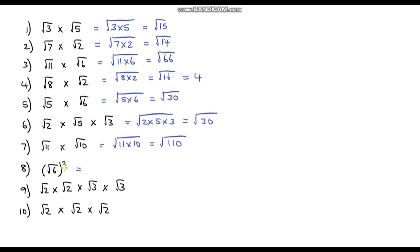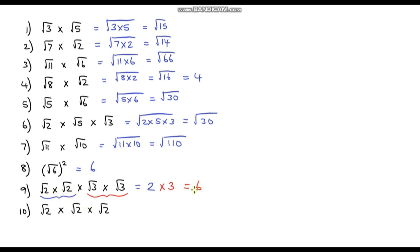The next one: the square root of 6 squared. Well that's the square root of 6 multiplied by the square root of 6, and the answer is just going to be 6. I don't need to do any calculations because I'm taking the square root of something and then squaring it — we're just undoing the operation, so we're back to where we started. For the following one: we've got the square root of 2 times the square root of 2 — that's just going to be 2. And then the square root of 3 times the square root of 3 is just 3. So all we've got is 2 times 3, which is 6.